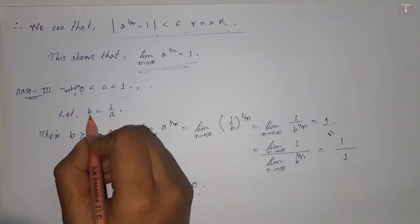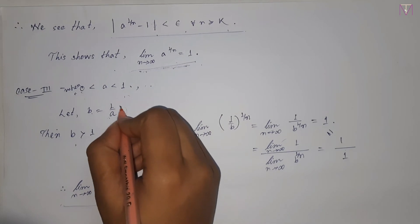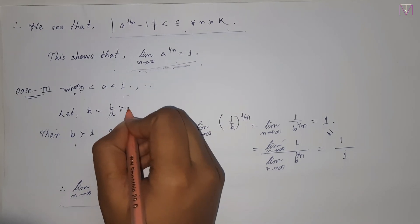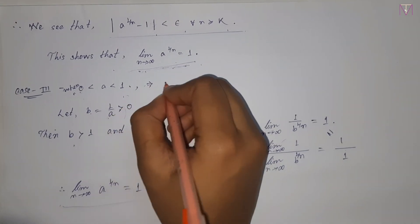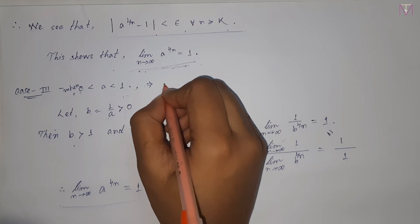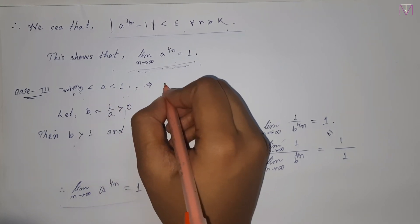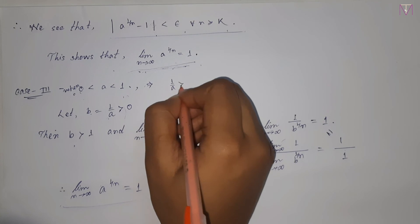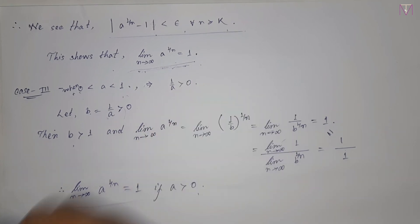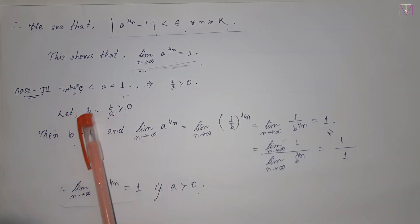Here, the value of b is taken where 1 by a is greater than 0, because when a is between 0 and 1, 1 by a is greater than 1, which is why we have taken b equal to 1 by a.